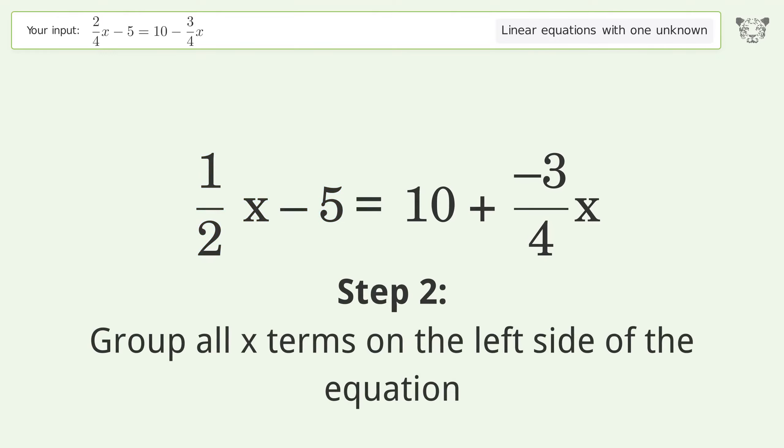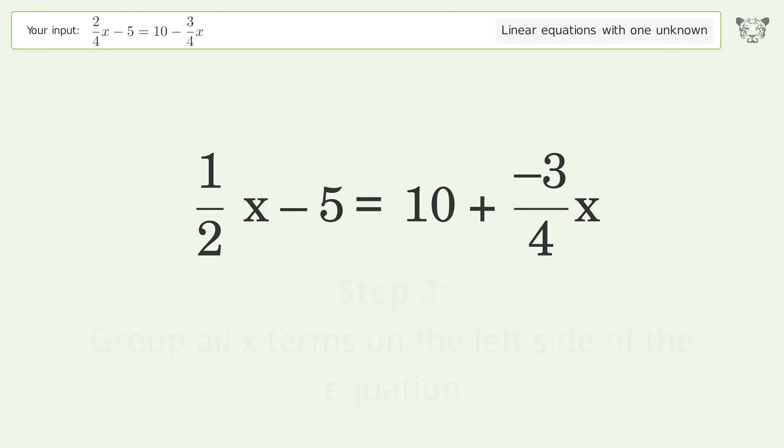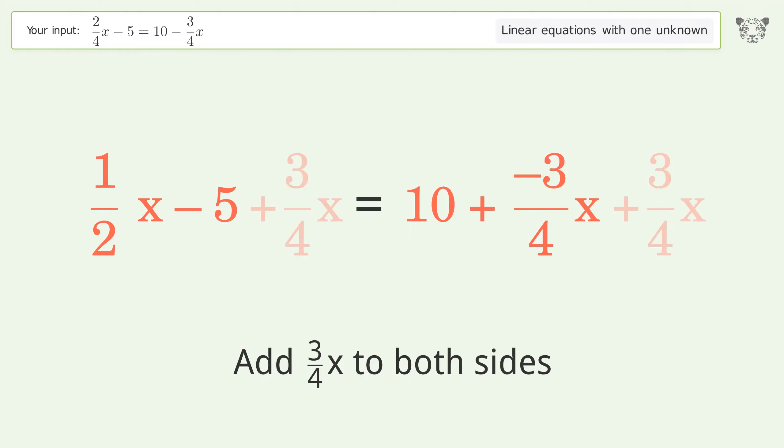Group all x terms on the left side of the equation. Add 3 over 4x to both sides. Group like terms.